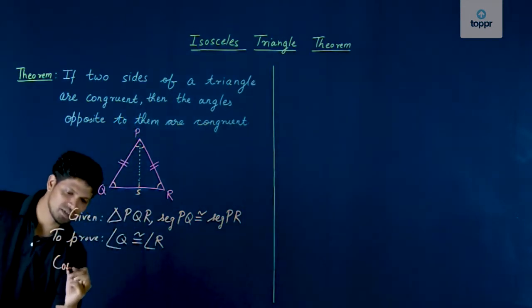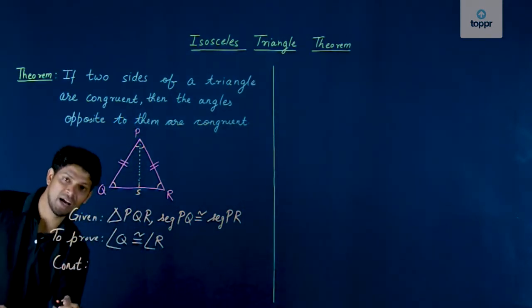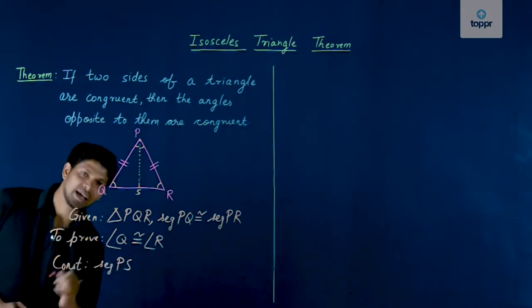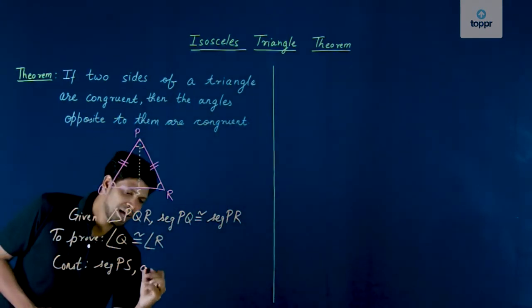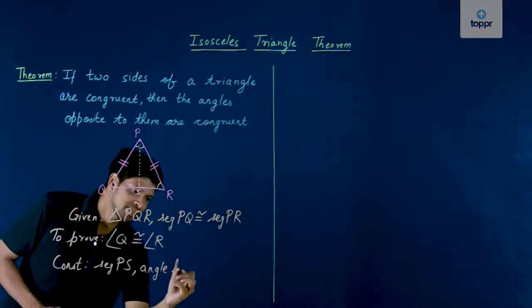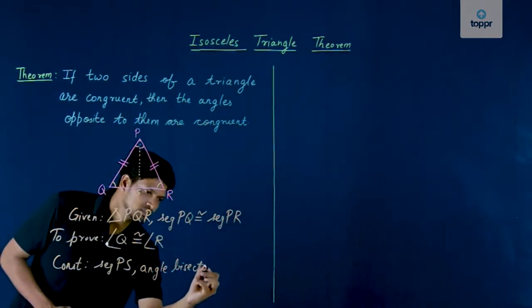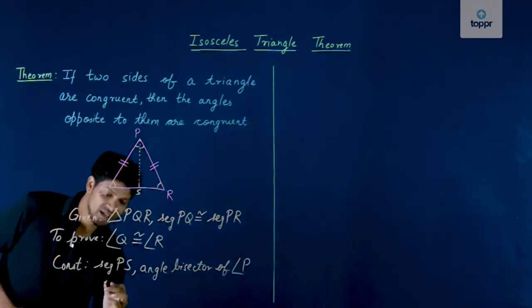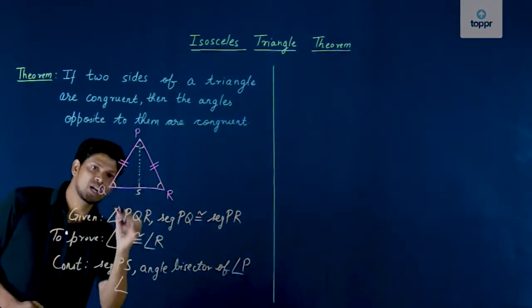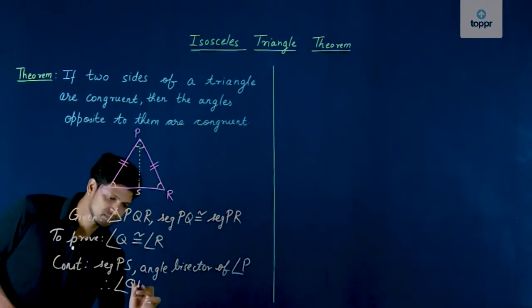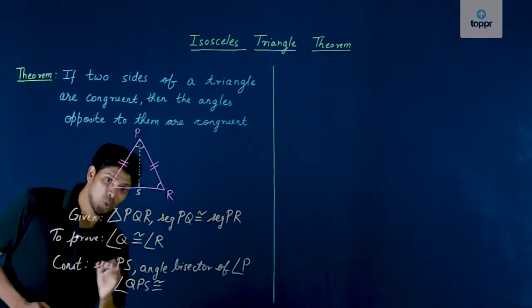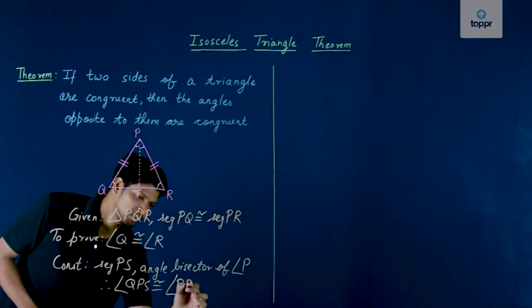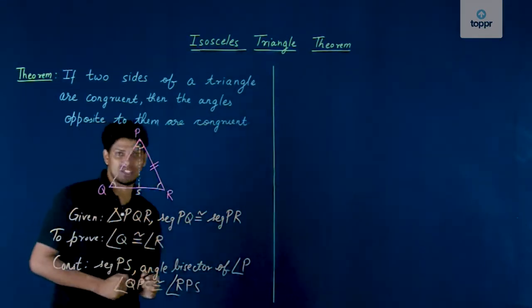As our construction, we have drawn segment PS, which is the angle bisector of angle P. Therefore, angle QPS is congruent to angle RPS.